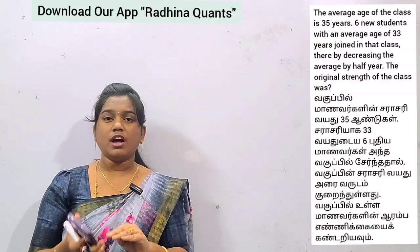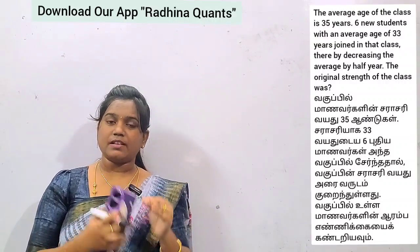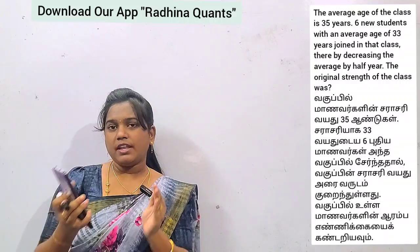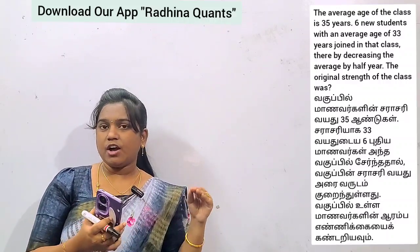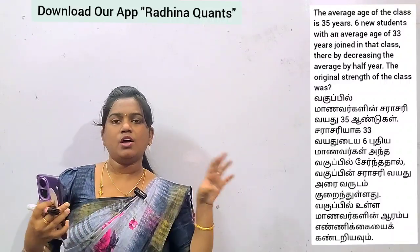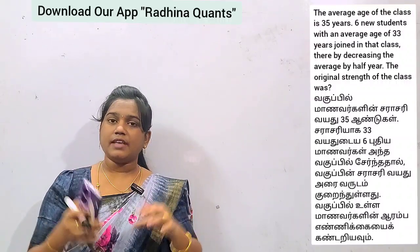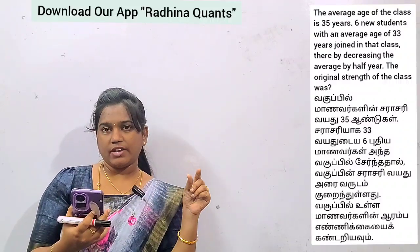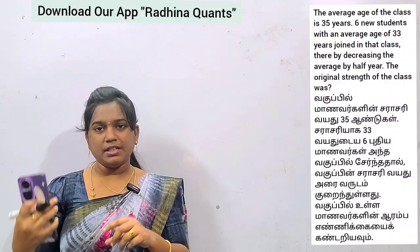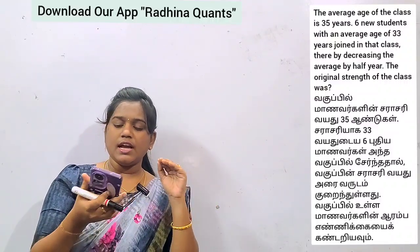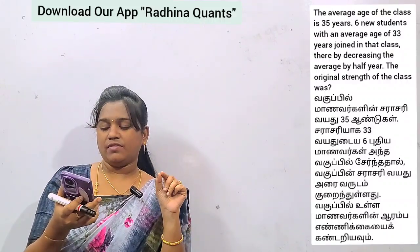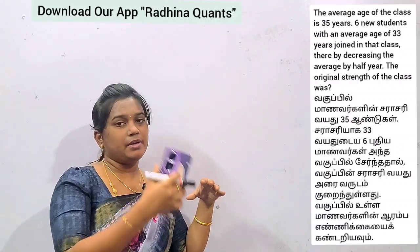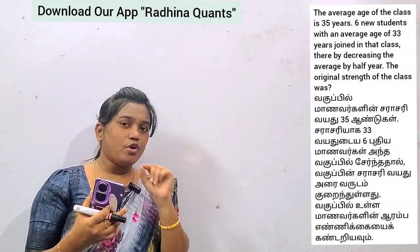Now, there are 6 new students with an average of 33 years joining. Previously the average was 35 years; if we include these 6 members with average 33 years, the average decreases. The average decreases by 0.5 years — half a year. So the new average is 35 minus 0.5, which equals 34.5 years.